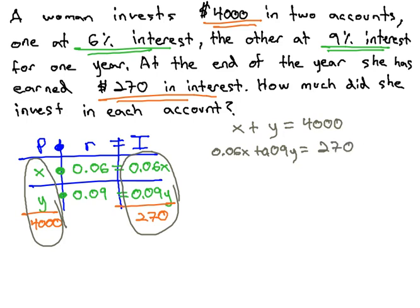And we have a problem we can solve by addition. Let's get opposites in front of the x by multiplying by negative .06 on both sides.